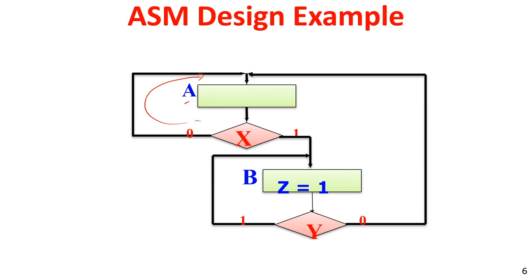If you are in state B, then output is equal to 1 — this is Moore-type modeling. In state B, based on the input value of y, it decides whether you go to state B again or go to state A. If y is 0 then it goes to state A; otherwise it stays in state B. When in state A, you do not care about y; when in state B, you do not care about x. From these English-like specifications we come up with the ASM chart.